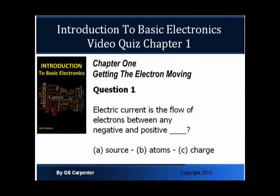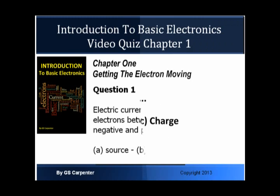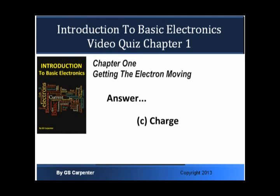Electric current is the flow of electrons between any negative and positive: A, Source; B, Atoms; C, Charge. Answer: C, Charge.